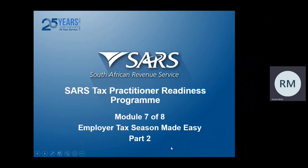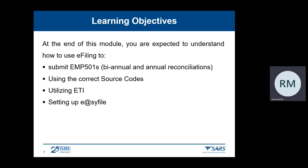Welcome to the SARS Tax Practitioner Readiness Program. This is part 2 of module 7, which deals with the employer tax season made easy. At the end of this module you are expected to understand how to submit an EMP501 via eFiling, using the correct source codes, how to utilize ETI (Employment Tax Incentive), and also setting up EasyFile.